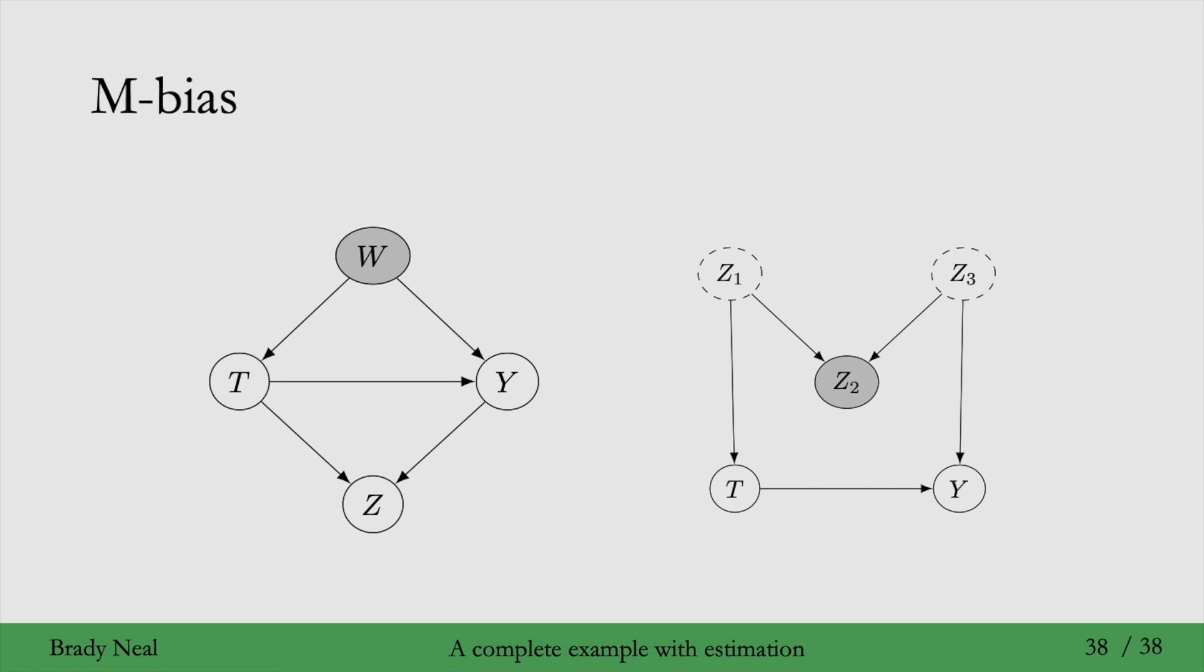So, in this graph, if we condition on Z2, we're going to have collider bias. If we observed Z1 or Z3, we would be able to prevent this collider bias by also conditioning on Z1 or Z3. But in this graph, they're unobserved. So the only way to actually prevent this collider bias, or the specific form, which is M bias here, is to not condition on Z2. Right? And the way to know not to condition on Z2, even though it may be pre-treatment here, is to write down the causal graph.